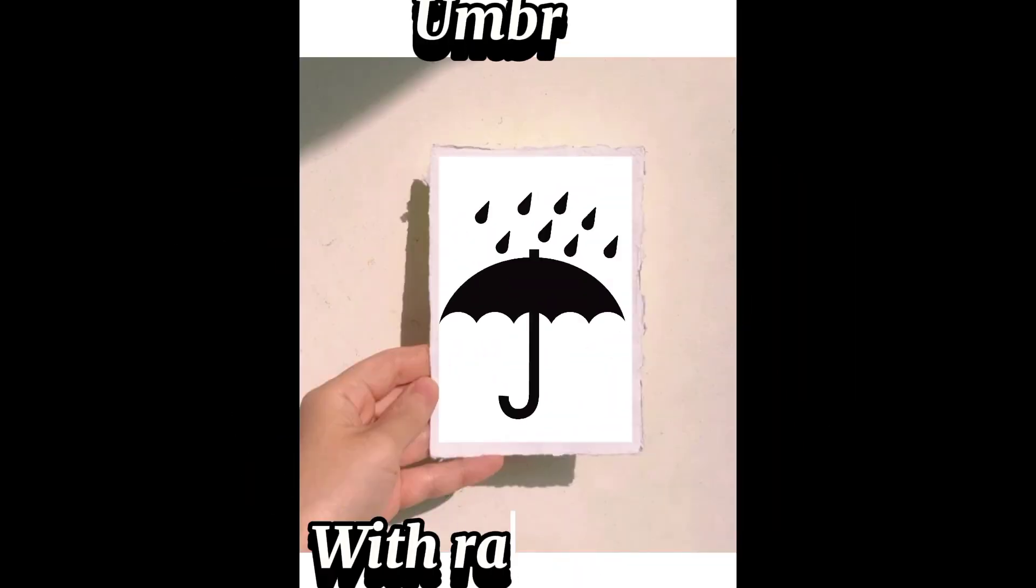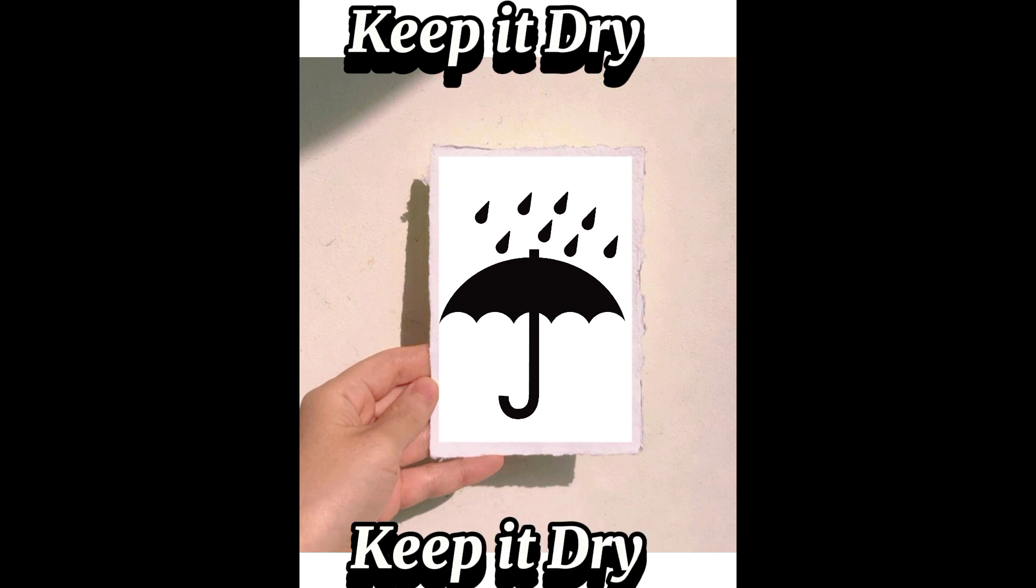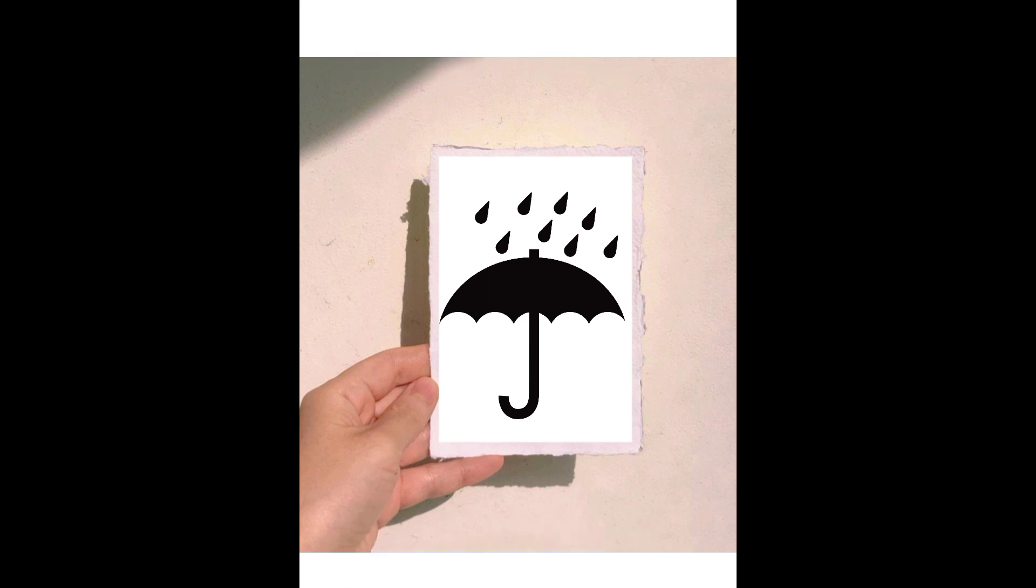Number 2 is the umbrella symbol with raindrops. This symbol warns you to keep the product away from moisture. Getting wet could damage the product, so we must keep it dry. This symbol is actually a simplified version of an umbrella, and we all know what umbrellas do. Tip: Store products with this symbol in a cool, dry place.